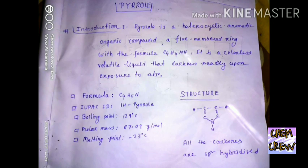It is a colorless volatile liquid that darkens readily upon exposure to air, so it is very reactive in the presence of oxygen. The formula of pyrrole is C4H5N. The IUPAC ID is 1H-pyrrole.